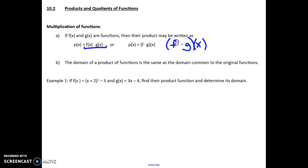So the dot represents multiplying. Keep in mind that the domain of a product of functions is the same as the domain common to the original functions. So if they're both an element of reals, then the new domain would be an element of reals as well. You just take whatever's common between the two domains.